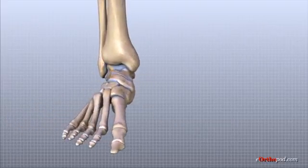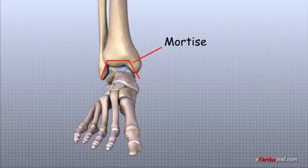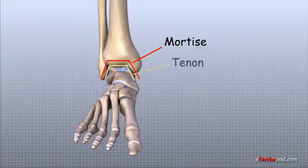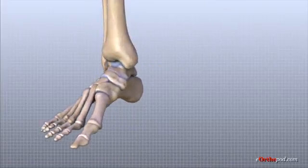The ankle socket is sometimes referred to as the mortise of the ankle because the structure of the ankle joint is similar to a joint used in woodworking called a mortise and tenon joint. It has been used by craftsmen for centuries to create strong, sturdy connections in furniture and buildings.